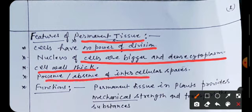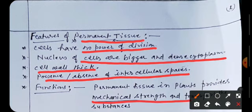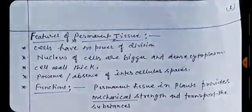Function of the permanent tissue. Permanent tissue in plants provide mechanical strength and transport the various substances. These substances are the water, minerals and the food in plant.